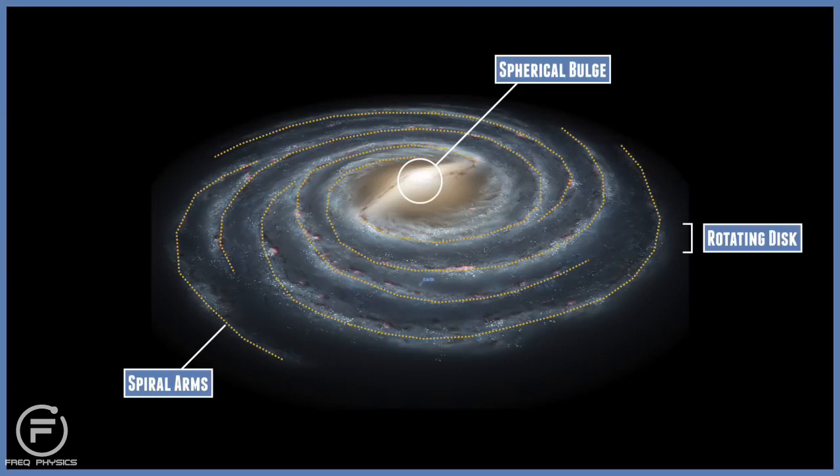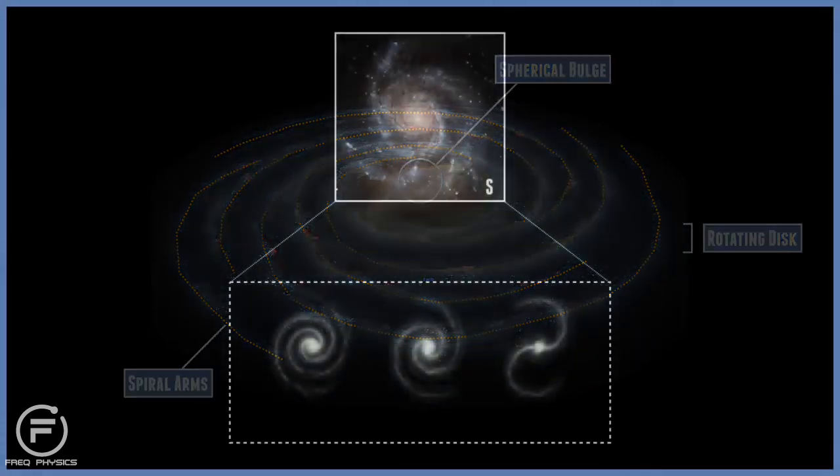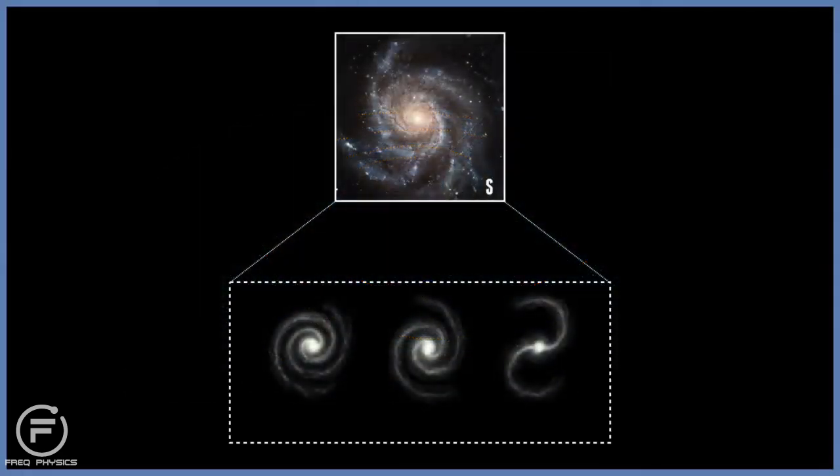Just like the ellipticals, the spiral galaxies, both regular and barred spirals, are subdivided into more categories. This depends on how tightly wound the spiral arms are. In SA galaxies, the spiral arms are tightly wound around the central bulge, whereas the SC galaxies have arms that are quite loose around the central bulge, and therefore are less prominent.